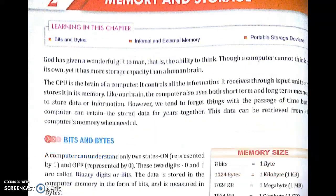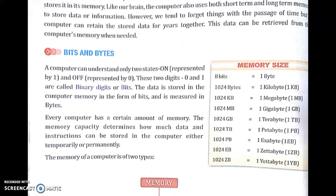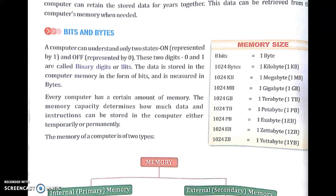Bits and bytes. A computer can understand only two states: on and off. These two digits, 0 and 1, are called binary digits, also known as bits.